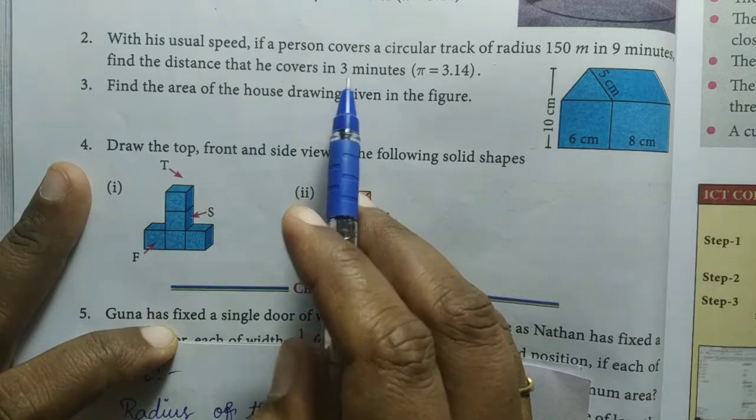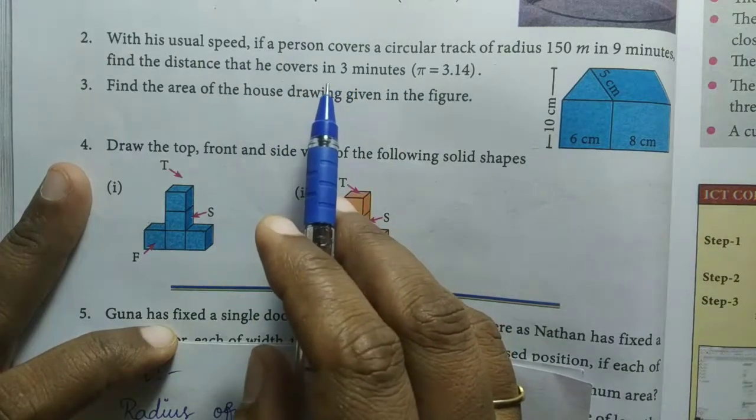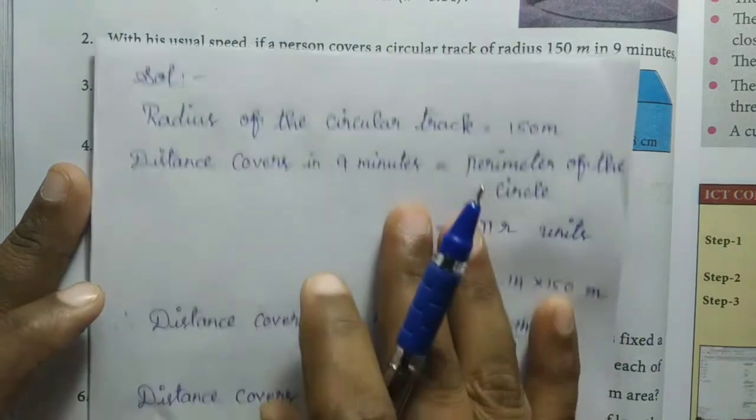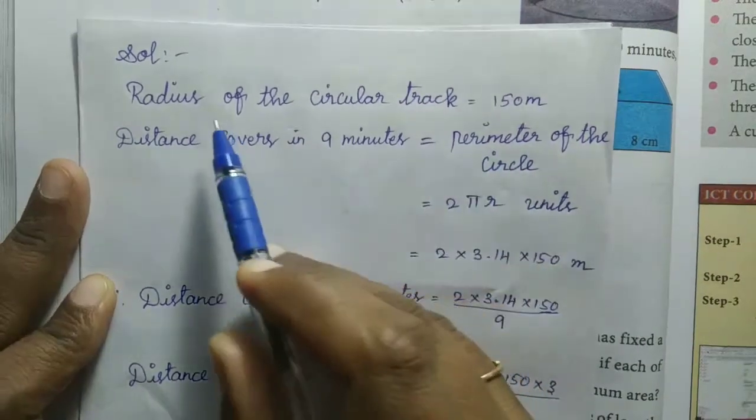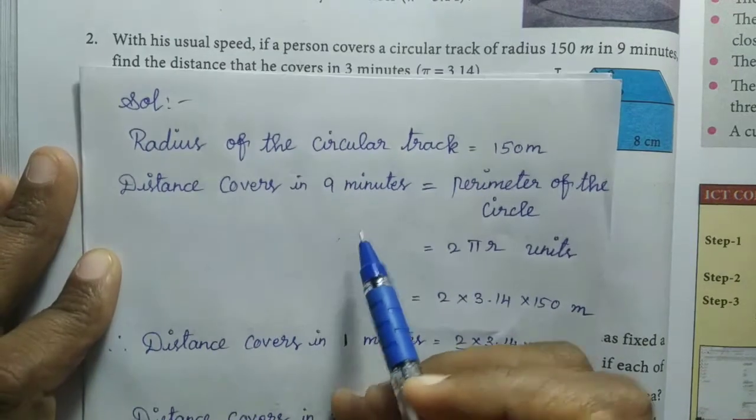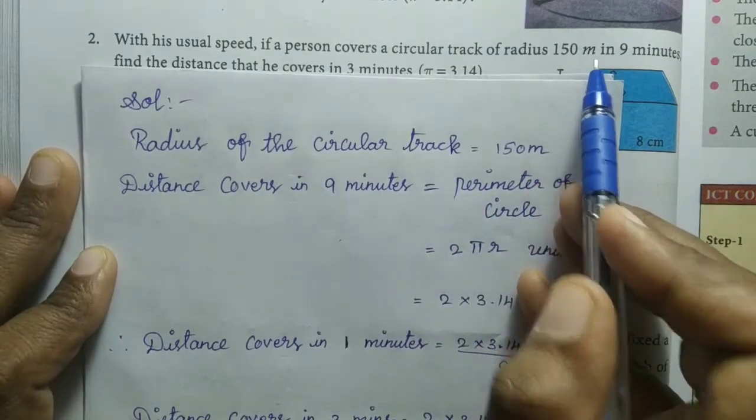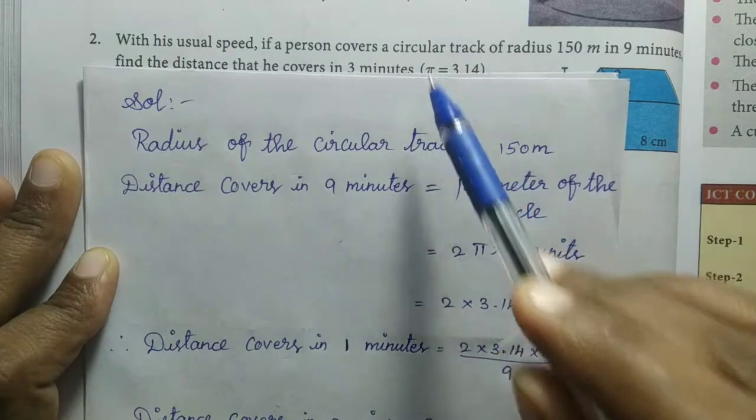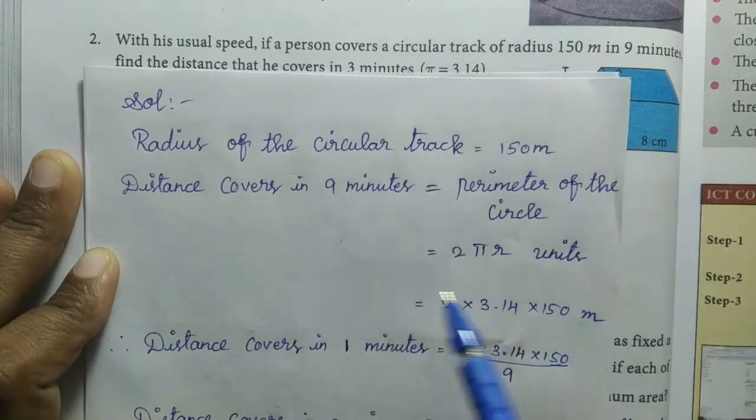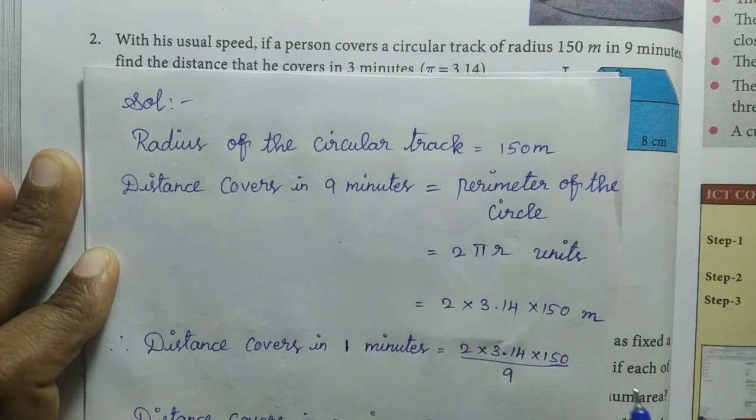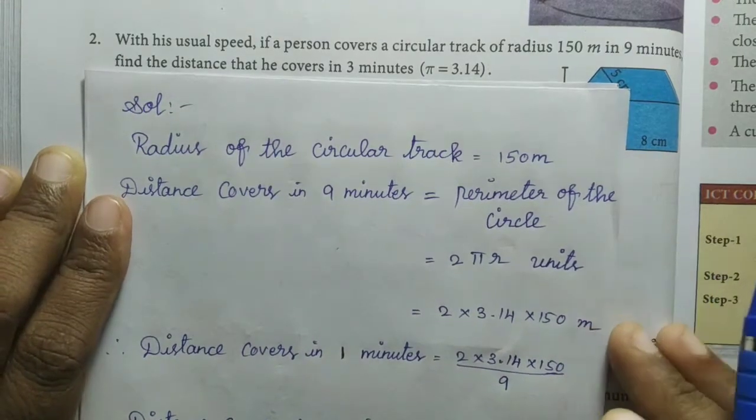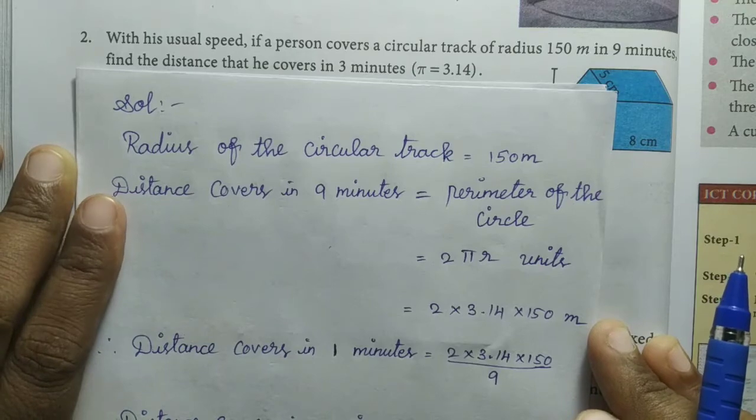The circular track radius is 150 meters, and distance covered in 9 minutes. To find the distance, we need to find the outer boundary of the circle, which is the circumference.